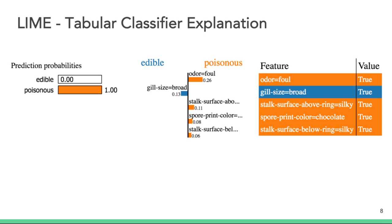This diagram illustrates LIME's output explaining an instance from a tabular dataset for a classifier predicting if a mushroom is edible or poisonous. The leftmost graph provides prediction probabilities for each class. Edible is predicted with zero percent probability. Poisonous is predicted with 100 percent probability.